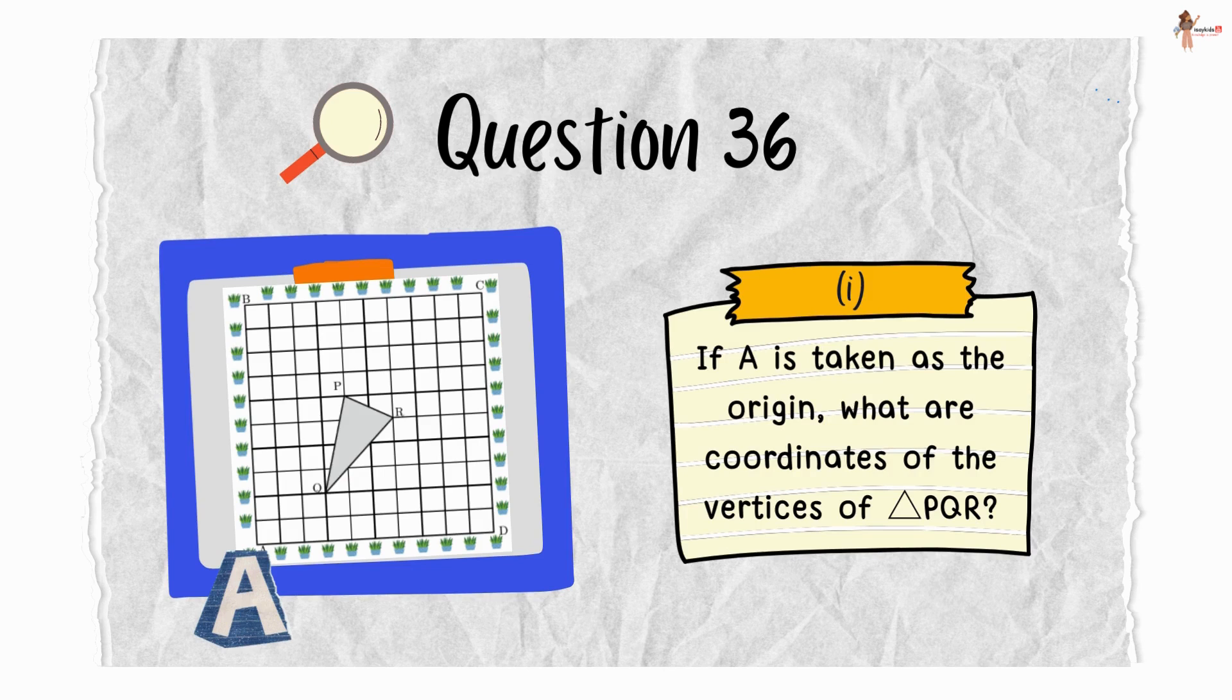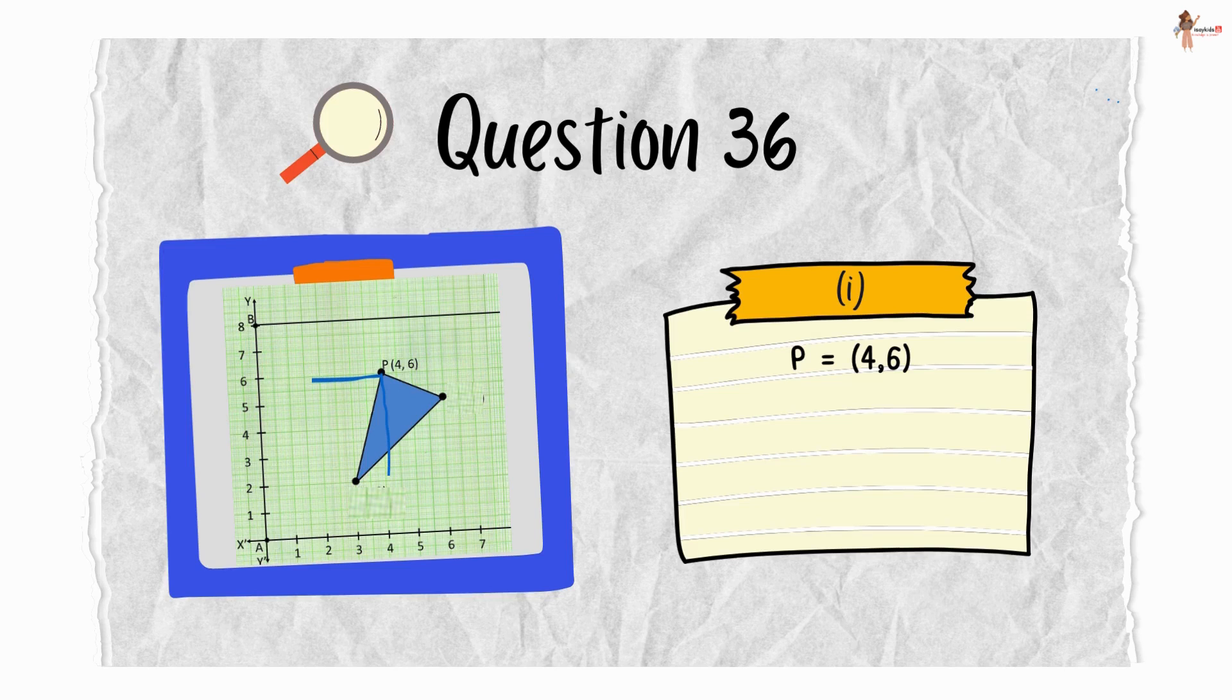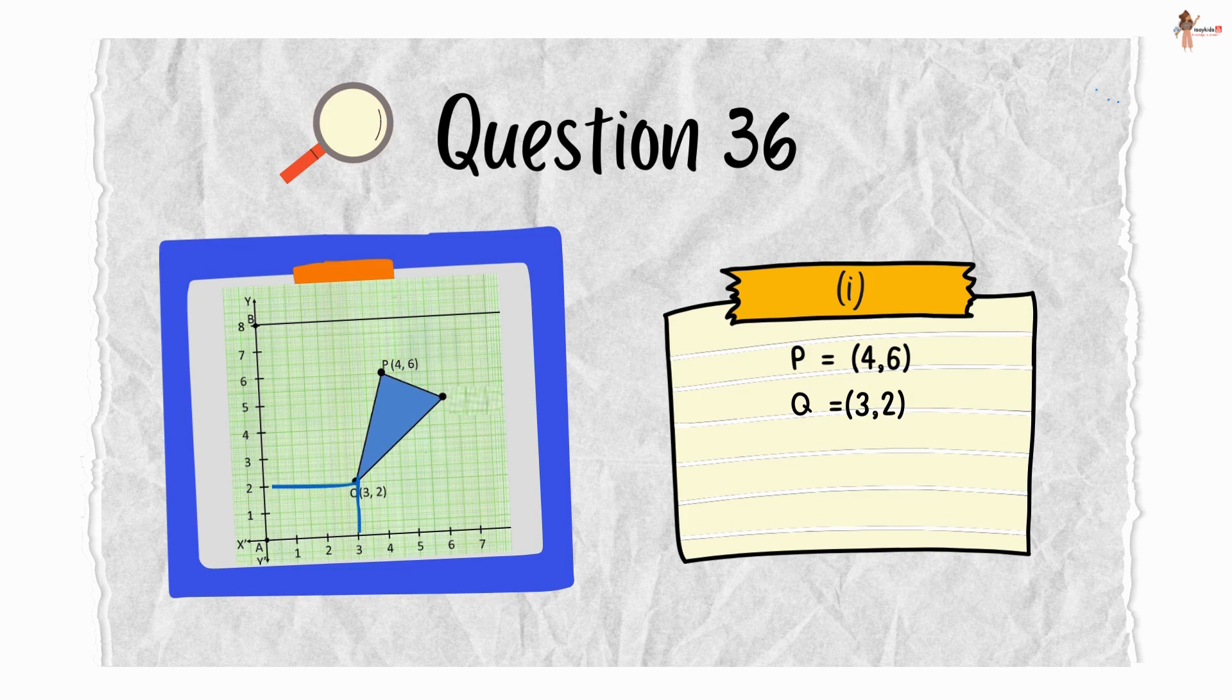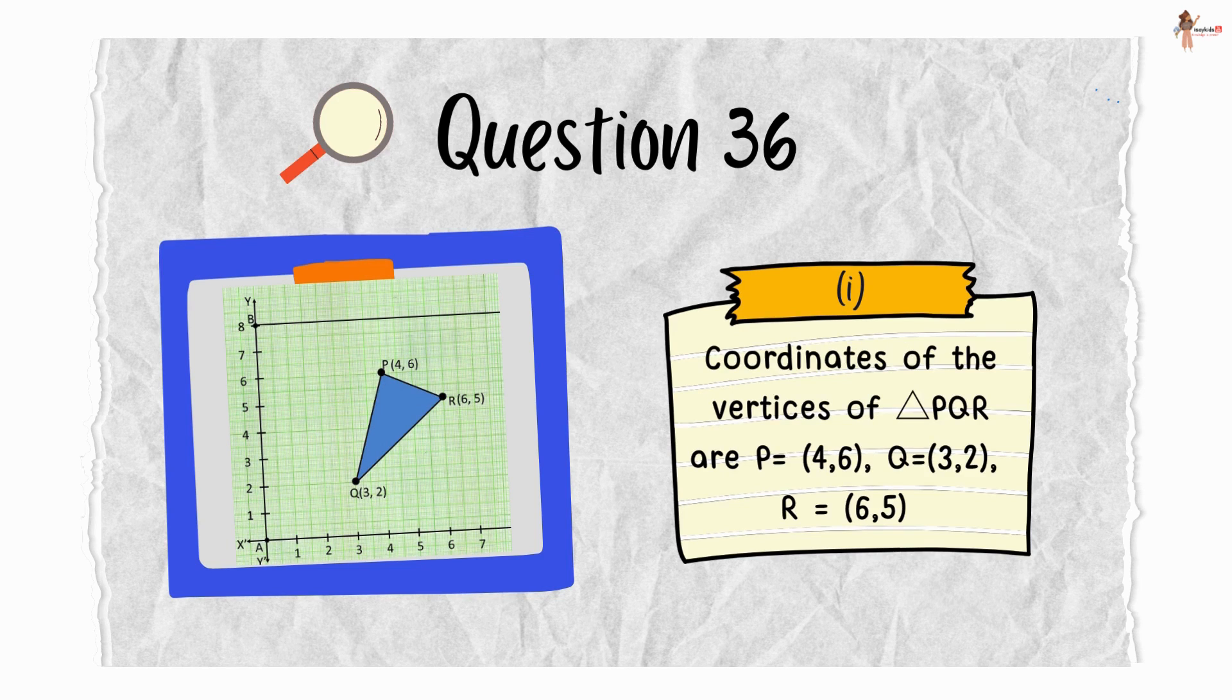If A is taken as the origin, what are the coordinates of the vertices of triangle PQR? Well, plotting it on the graph, you will see that P is (4,6), Q would be (3,2), and R is (6,5). So the coordinates of the vertices of triangle PQR are P(4,6), Q(3,2), and R(6,5).